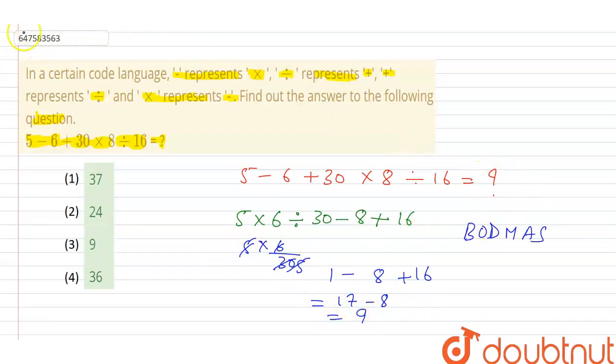17 minus 8 equals 9. 9 is the right answer. Option 3 is the right answer of this question. Guys, these signs are represented, so we can change using BODMAS rule. We can solve: 30, 6 divided, 5 multiply, so 1 minus 8 plus 16, then add 16 or 17, then we do subtraction.